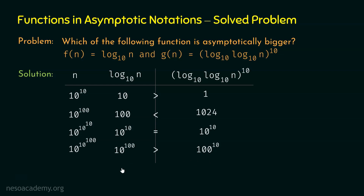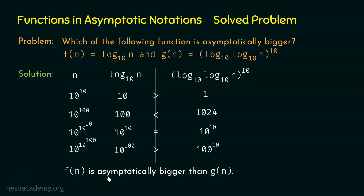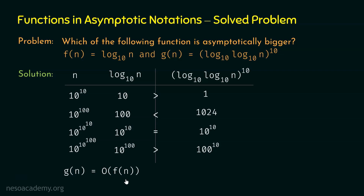Therefore, we can say that f(n) is asymptotically bigger than g(n), and hence g(n) = O(f(n)). Clearly, f(n) is asymptotically bigger than g(n).